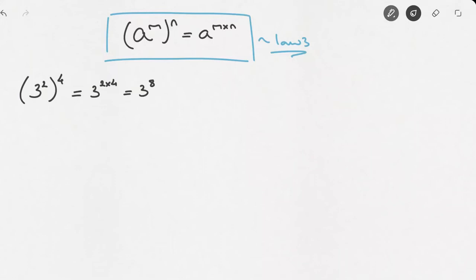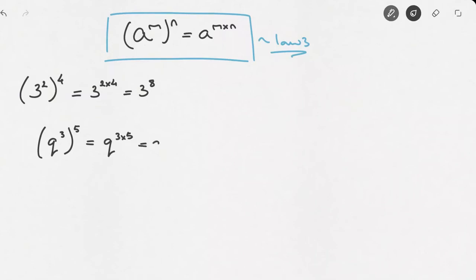Or we could be given an expression involving variables — for instance, q raised to the power of 3 raised to the power of 5. Using the third law of exponents, this equals q to the power of 3 times 5, which equals q to the power of 15.